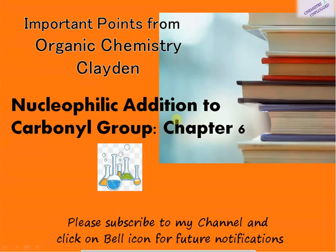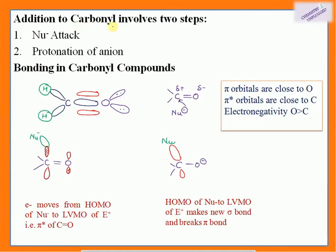This is chapter number six. If we want to do an addition reaction to carbonyl groups, there are two steps. The first step is the attack of the nucleophile, and the second is protonation of the anion which is generated after the attack of the nucleophile. First, we have to understand what the bonding in carbonyl groups is.